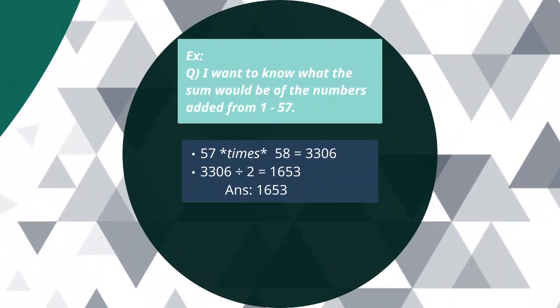Let's look at one final example. I want to know what the sum of the numbers added from 1 to 57 would be. First thing we do, 57 times 58, which is 3,306. And now divide it by 2, I get 1,653. Which is my answer.